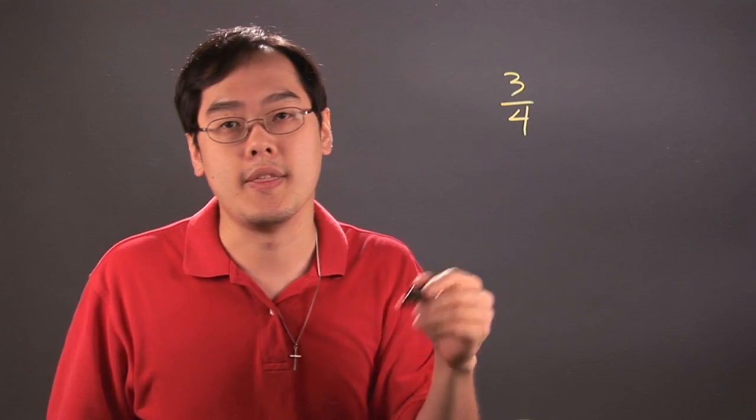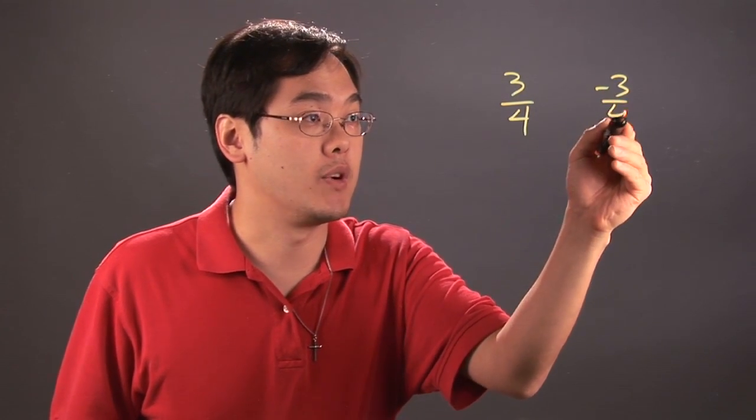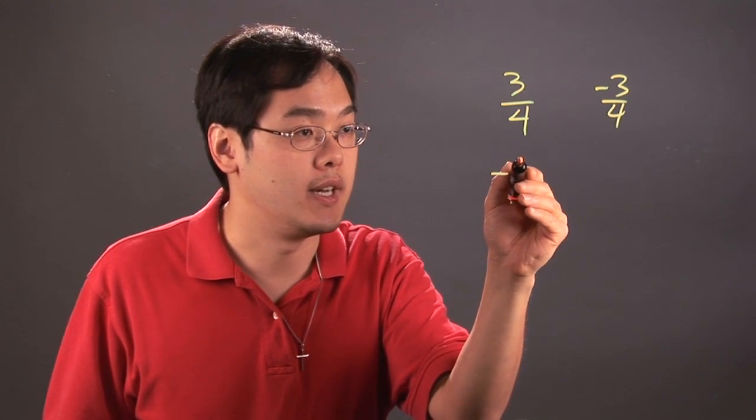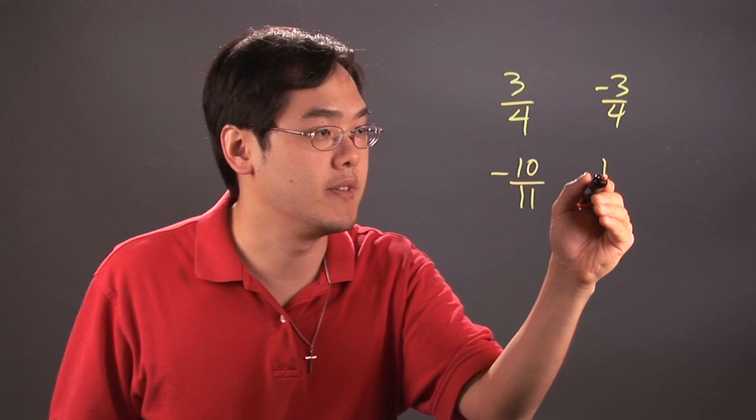When it comes to addition opposites, oftentimes we're talking about the number that's opposite in sign. So if you have 3 fourths as an example, the addition opposite of 3 fourths would be negative 3 fourths. Or if the number was negative, if you have negative 10 over 11, the addition opposite of it would be positive 10 over 11.